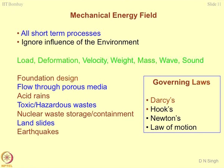Landslides are a good example of how potential energy and kinetic energy can interchange several times. A landslide takes place because of excessive potential energy; when the soil or rock mass falls down, it attains kinetic energy, then defragments, and those materials start moving again — rolling and sliding down — until they achieve a stable position. Earthquakes also involve waves, sound, mass, and velocity. We are able to tackle all these problems in geomechanical engineering with the help of the mechanical energy field theory.